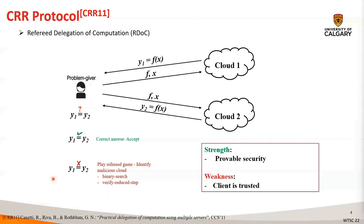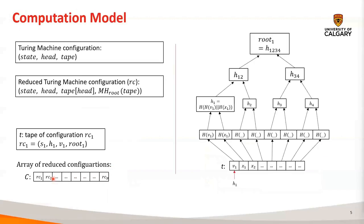However, it assumes that the client is trusted and follows the protocol. In practice, clouds need to trust the client who works as a trusted third party for their promised payments for the computation. CRR assumes a Turing machine to describe the computation, where the intermediate states of the computations are represented as reduced configurations. For example, given a Turing machine configuration consisting of a state, head, and tape, the reduced configuration is defined to be a tuple consisting of the state, head position, a value at the head location, and a Merkle root constructed on the tape contents. Since the root is used in the configuration instead of the whole tape contents, that is why it is a reduced configuration.